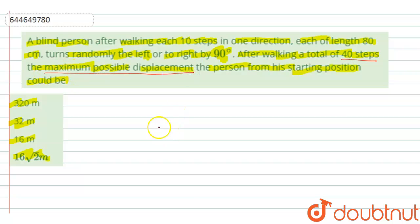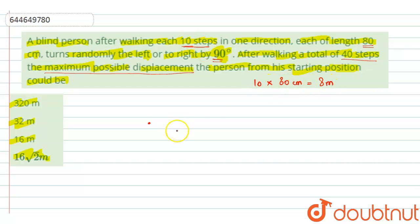So we are having a person who is walking 10 steps each in one direction, each of length 80 centimeters. After each 10 steps, he turns left or right randomly by 90 degrees. The length of 10 steps would be 10 × 80 centimeters = 800 centimeters, that means 8 meters is the length of 10 steps. Initially, let's say the person is moving in the right direction — this is 8 meters.